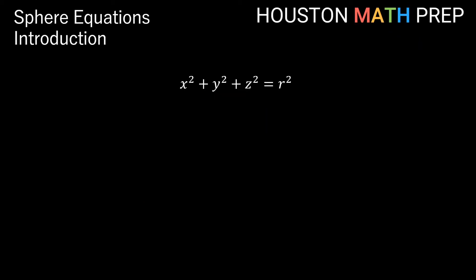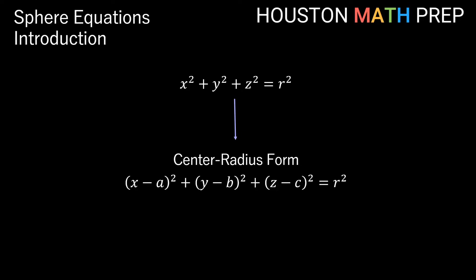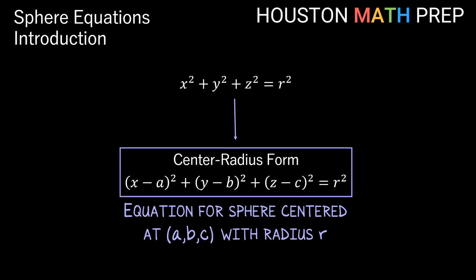Now we'll make sure we can handle any case, even when the sphere is not centered at the origin. The general center-radius form represents the same sphere but shifted: shifted by a units in the x direction, b units in the y direction, and c units in the z direction. This equation takes care of all cases no matter where the center is. Because we've shifted a in x, b in y, and c in z, the center is at (a, b, c) and the radius is still r, with r squared on the other side.